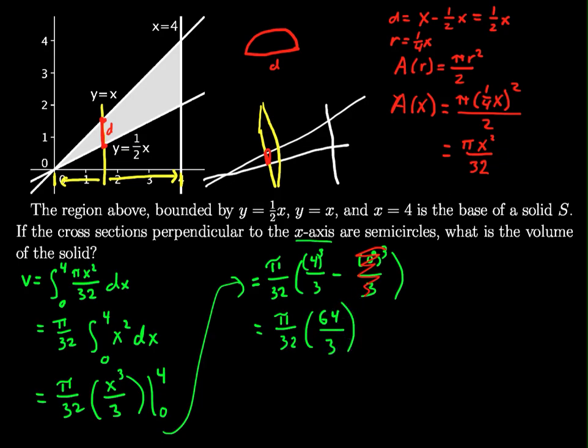And this 32 and the 64 become 2 and 1, so I get my final answer, which is 2 pi over 3. Let's go back and check it out.